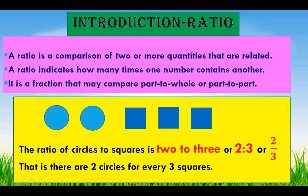Here, the ratio of circles to squares is 2 to 3. You can find two circles and three squares. So, we call it 2 to 3 or 2 is to 3 or 2 by 3. That is, there are two circles for every three squares.